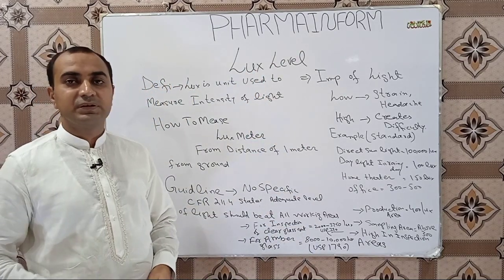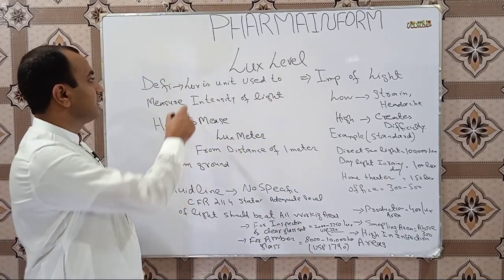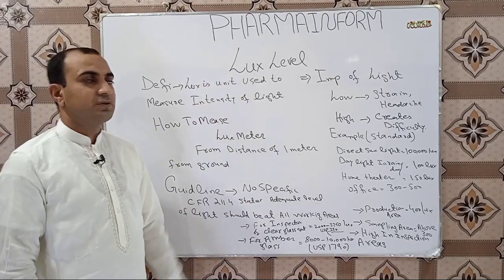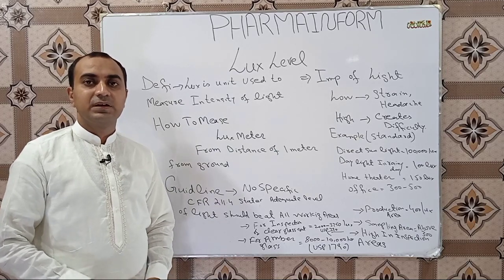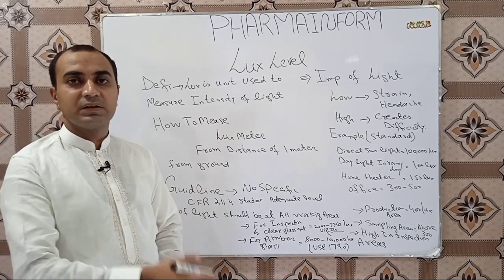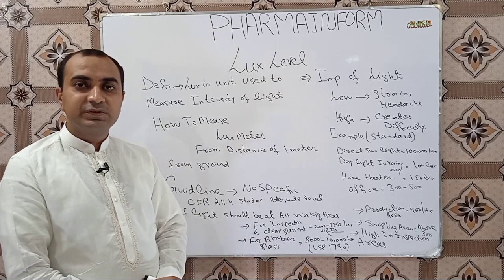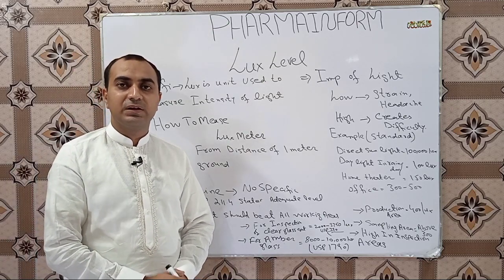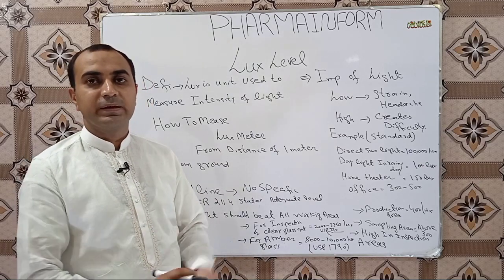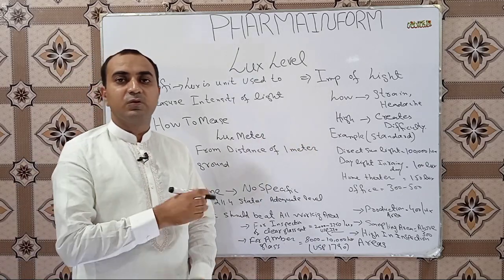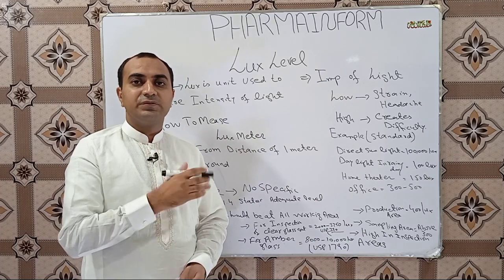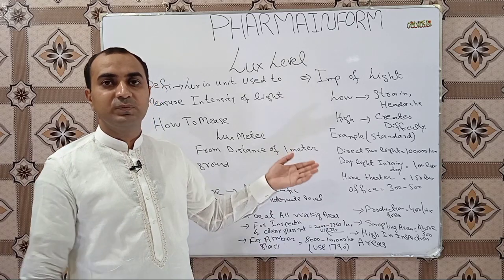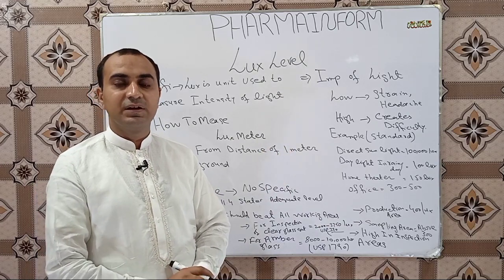Lux level — basically, lux level is the unit used to measure the intensity of light. In any area, the intensity of light is measured in terms of lux. For example, in the room where I am recording this video, the intensity of light in this room is known as lux.